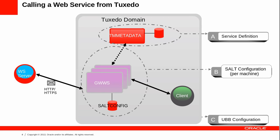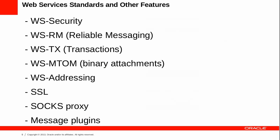Using a gateway is also helpful when it comes to configuring extra features such as security, encryption, transactions, reliable messaging, or proxy settings. The web services standards supported are security, reliable messaging, transactions, attachments, and addressing — all by way of standard policy assertions. Also supported are encryption or SSL, SOX proxy, and message plugins.